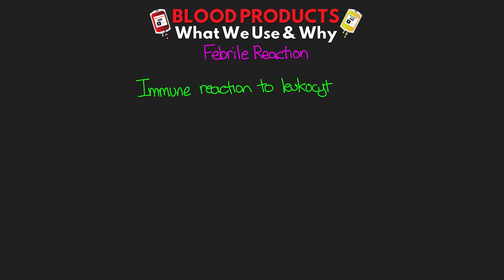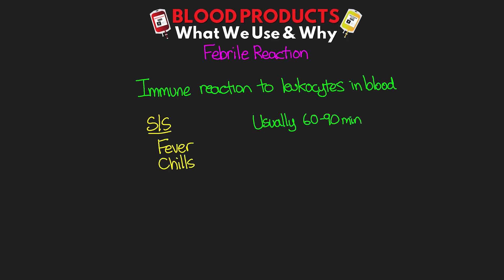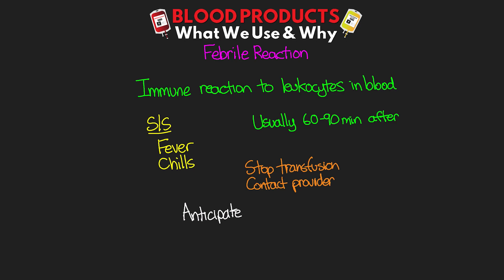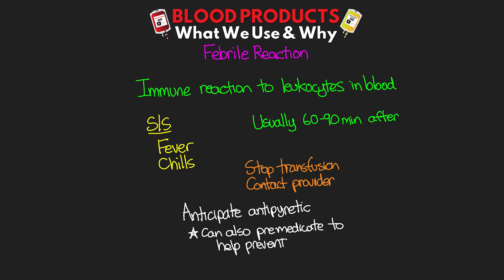The next reaction is going to be our febrile reaction. This is going to be a result of the patient's immune reaction to the leukocytes in the donor blood. Signs and symptoms are going to be fever and chills. Usually this doesn't appear until about 60 to 90 minutes after you start giving the blood. Stop the transfusion, contact the provider, and then anticipate giving an antipyretic. We can also premedicate patients with an antipyretic to potentially help prevent this.